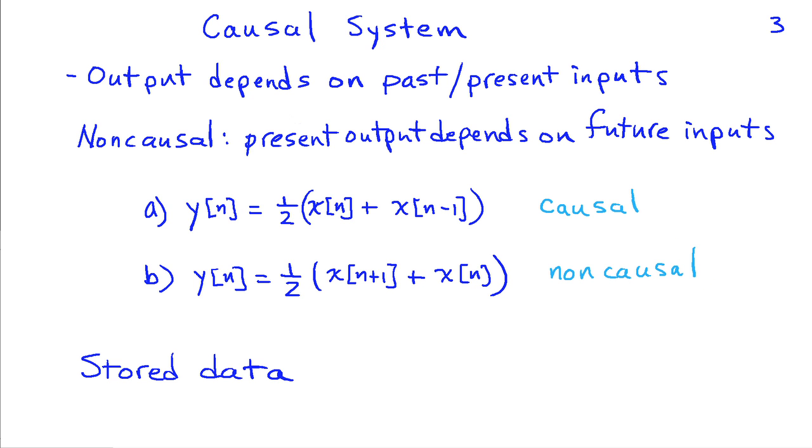It would seem that non-causal systems are not all that useful, but in the case where you have data that's been recorded, in some sense you do have access to future values. You can process that data, at least with respect to time within the data record itself, you can process it in a non-causal manner.